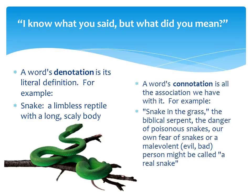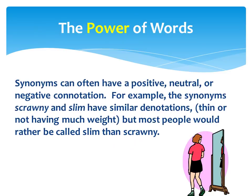I think I know what you said, but what exactly did you mean? Let's look at another example. Consider a snake. The denotation, or literal definition of the snake, could be a limbless reptile with a long, scaly body. Yet snake has many other connotations. Snake could mean a person who is a snake in the grass — someone who is sneaky and malevolent. Depending on the author's attitude, they may select a word that has a positive, neutral, or negative connotation.